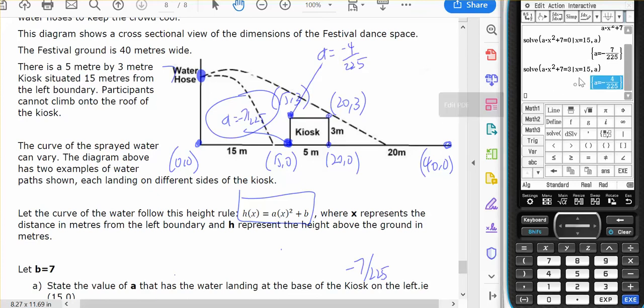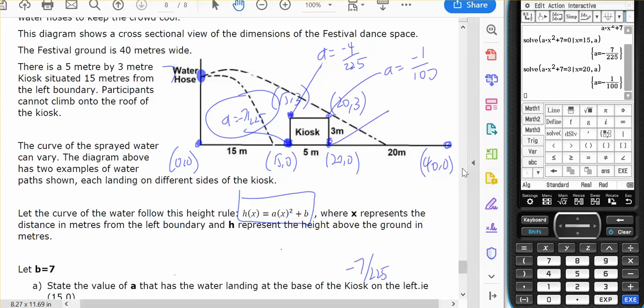At this point here when x equals twenty. This is a equals negative one on one hundred.